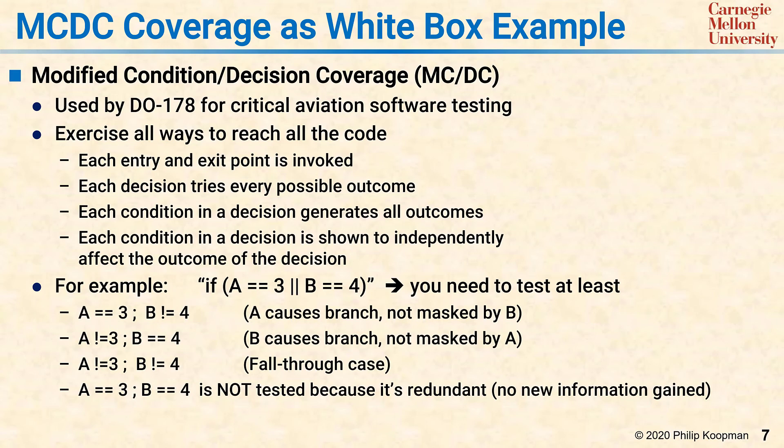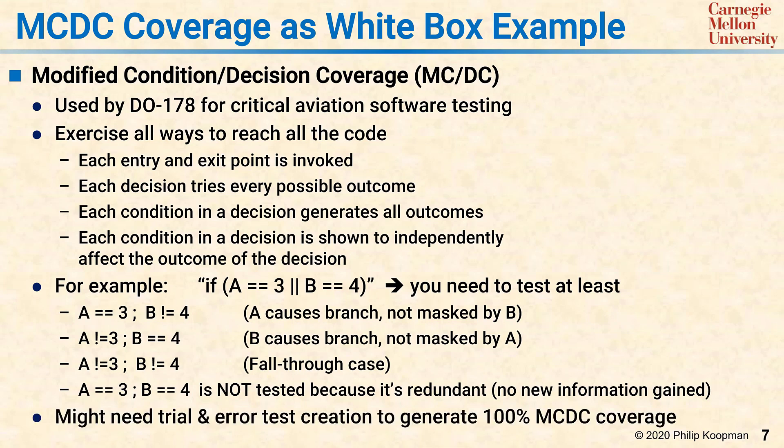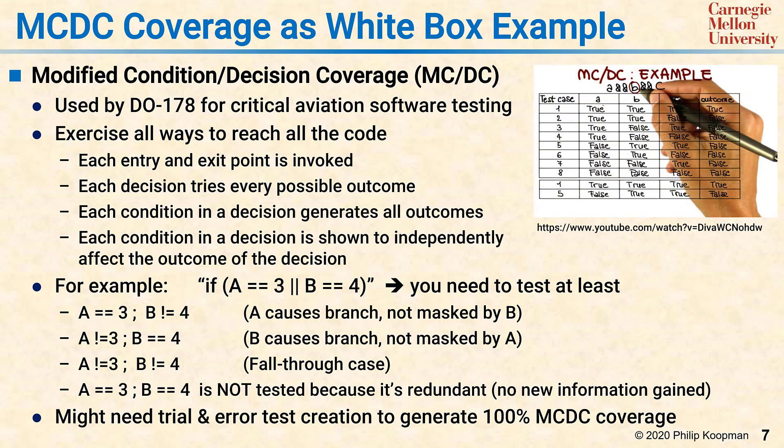For simple ANDs and ORs, you generally need one more test than the number of terms in the condition clause. For two terms, you need three tests; for five terms, you need six tests, and so on. If you have more complicated expressions, there's a truth table technique that can help, and you may need trial and error to find all the different variations. The next item in the playlist is a video from another author which works a truth table example for MCDC coverage.